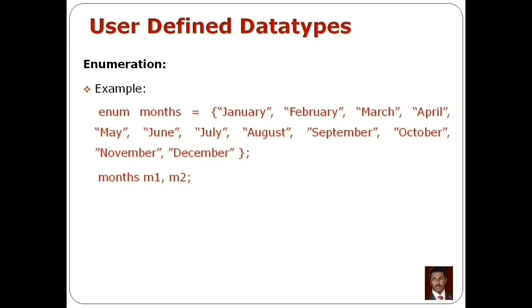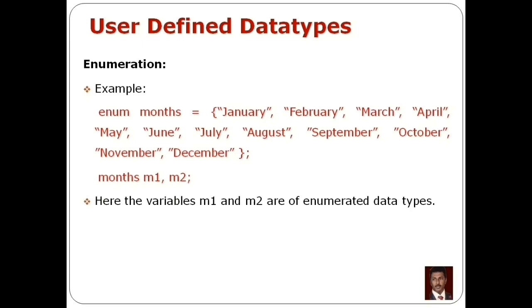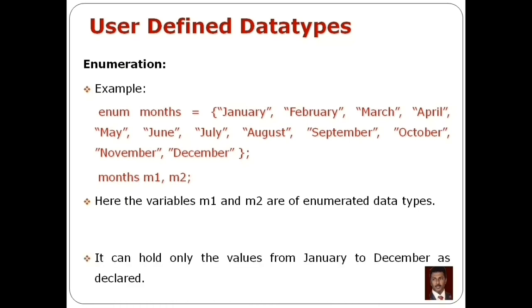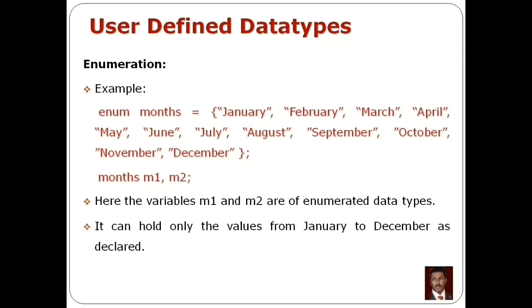Now we have to create the enumerator variable as a normal variable. We create the enum variable. Here, variables M1 and M2 are enumerator data types, so M1 and M2 are enumerator data types. The type is 'month', so 'month' is the type. If you have any set of values, they can hold only the values from January to December as declared — those 12 values that M1 and M2 can use as enumerator variables.